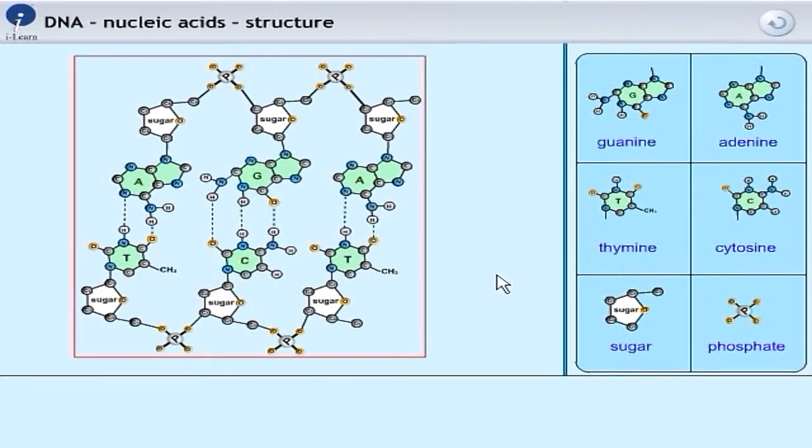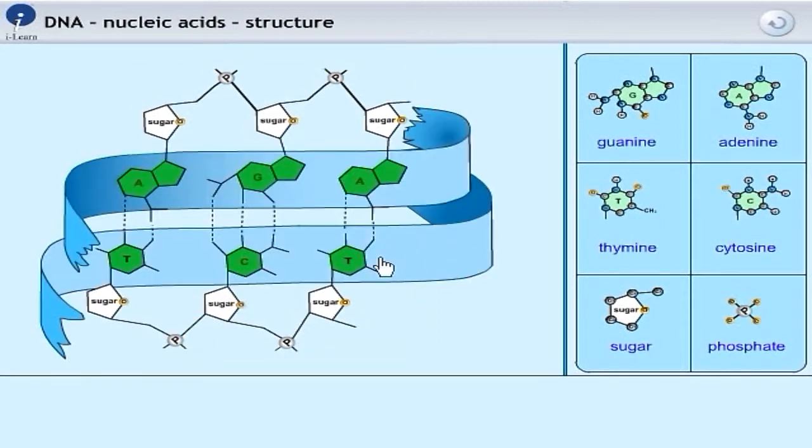You notice how they're joined together. In fact, the one base is joined to the other by these dotted lines. These things we call hydrogen bonding. And I just mouse over there and you'll see something of the shape which we are trying to allude to.